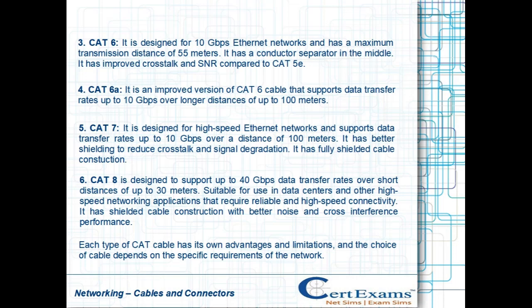CAT 7 is designed for high-speed Ethernet networks and supports data transfer rates up to 10 gigabits per second over a distance of 100 meters. It has better shielding to reduce crosstalk and signal degradation, and features fully shielded cable construction.